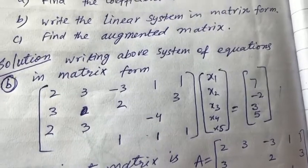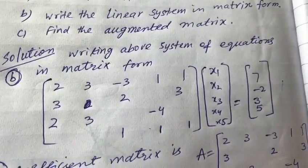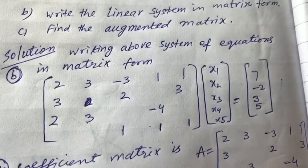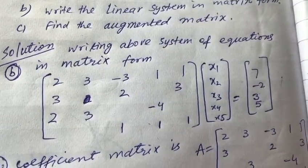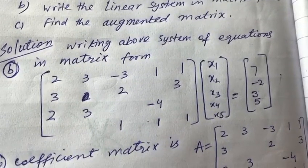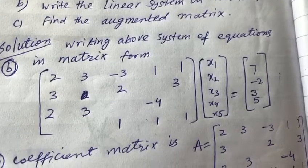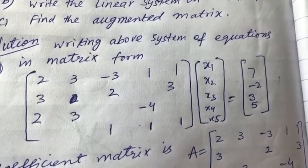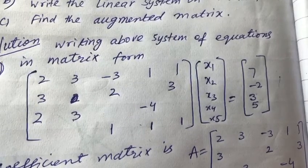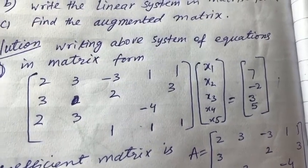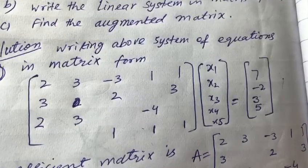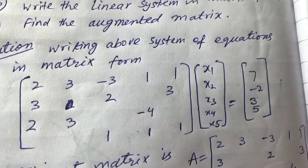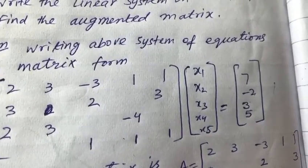We will write in the first matrix the coefficients of all variables in the given system of equations. In the second matrix, we will write all the variables, and on the right-hand side of this system, we will write the right side of the equations.